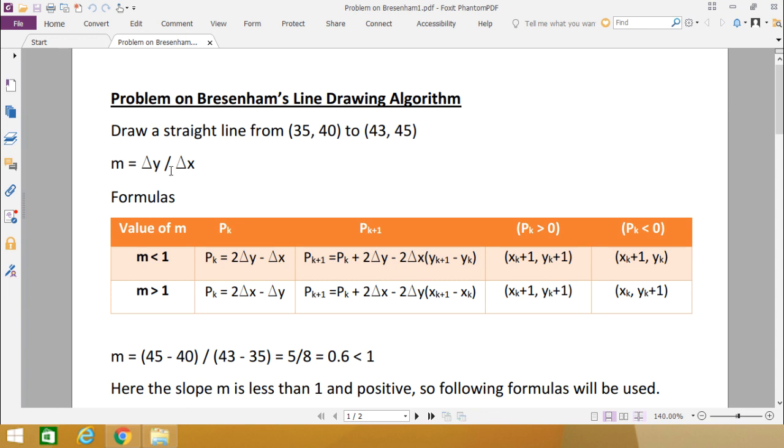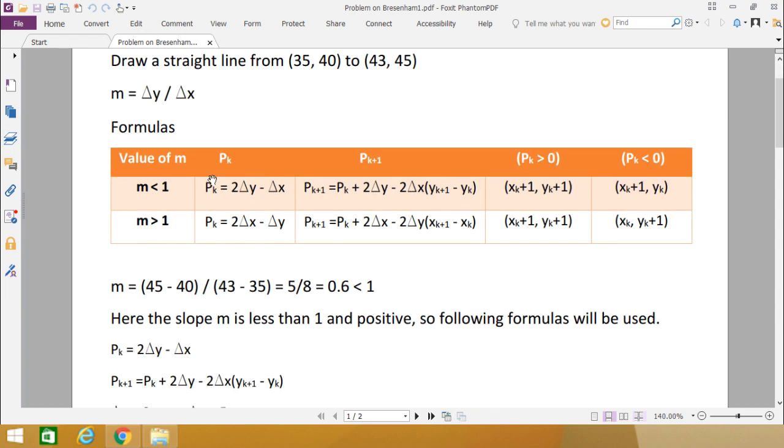m equals delta y by delta x. Here we have written one summary table. If the value of m is less than 1, then what to be the equation for calculation of decision parameter pk, pk+1. If pk is greater than 0 then what to be the next x and y. If pk is less than 0 then what to be the next x and y to be calculated. Similarly, here m is greater than 1.